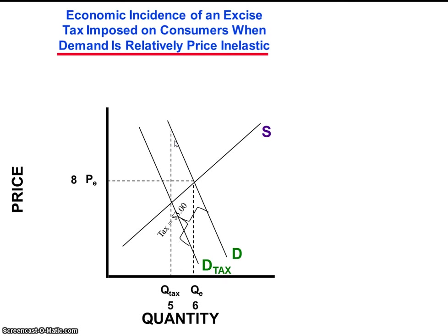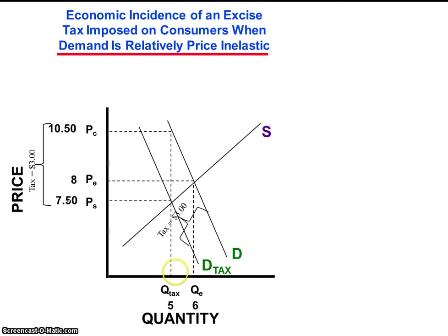The intersection of the new demand curve in the taxed market intersects the supply curve at a different point, revealing a decrease in output from 6 to 5 — less than the decrease previously observed — suggesting that consumers are less sensitive to price increases resulting from the tax. We also see the two new effective price points: the effective price confronted by consumers, P subscript C, or $10.50 in this hypothetical scenario, and the effective price realized by sellers, P subscript S, or $7.50. The difference between PC and PS is still the amount of the tax, $3 ($10.50 minus $7.50).